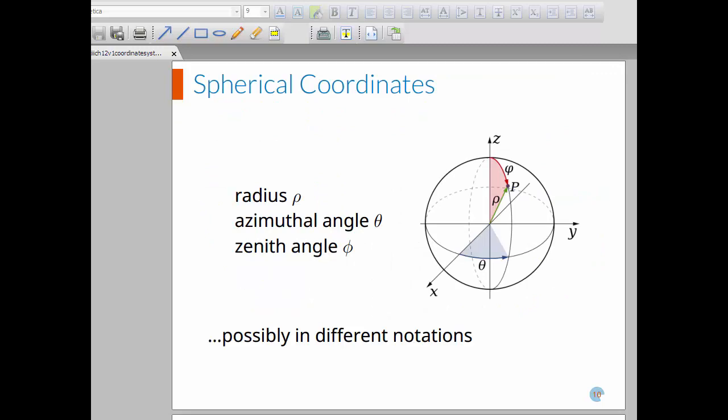Let's look now at the spherical coordinates. In spherical coordinates, a point is denoted, again, by three numbers. And the three numbers have to be a radius from the origin, an azimuthal angle, and a zenith angle. The azimuthal angle is measured in the XY plane, and the zenith angle is measured from the Z axis. Using the notation shown here, the point would be located at (rho, theta, phi).